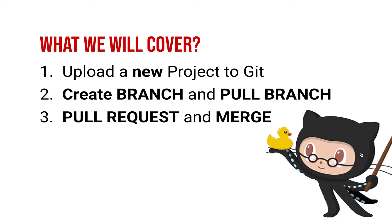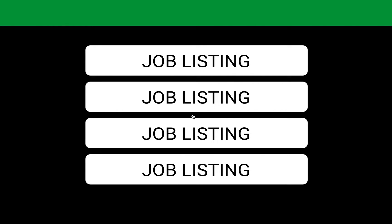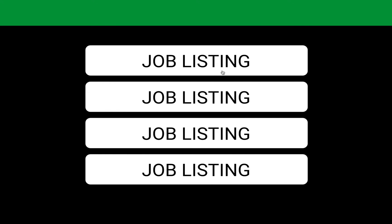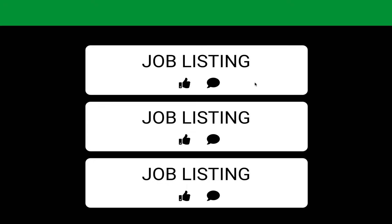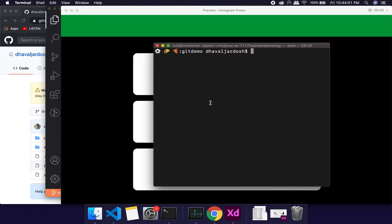Now let's look at how to create a branch and pull data from it. Say your company has a job listing portal and you have a feature request to add 'like and comment' functionality. You need to make a copy of master, work on it, and once done, push it and make a pull request so the reviewer can verify and then merge it into master.